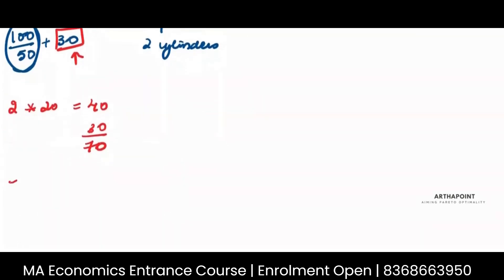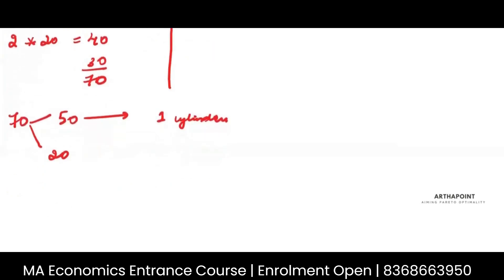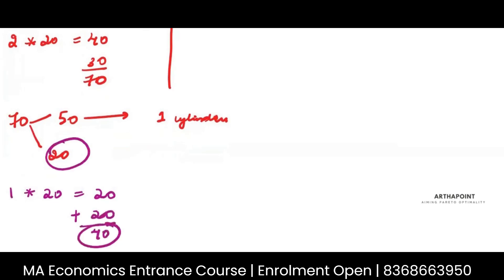70 is not divisible by 50, so I use 50 rupees and save 20. From that 50 I buy 1 cylinder. On this one cylinder I get a refund of 20 rupees, and I had saved 20, so I have 40 rupees. But I cannot go further because one cylinder costs 50 and I only have 40, so I stop here.